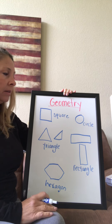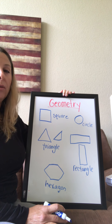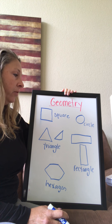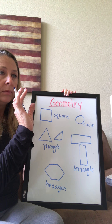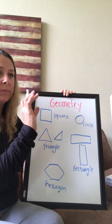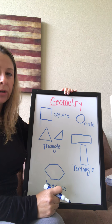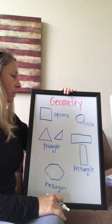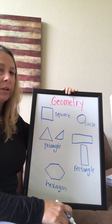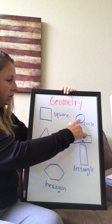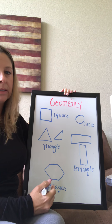All of these are what we would call flat shapes or two-dimensional shapes. We call them plain figures or flat shapes — they're not solids, they're just flat, plain shapes. So we will call these flat shapes or two-dimensional plain figures. So again, we have squares, circles, triangles, rectangles, and hexagons.